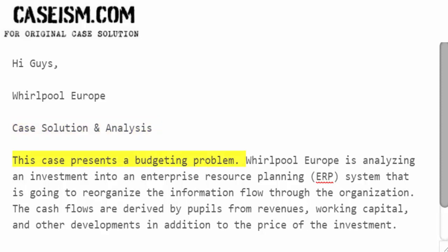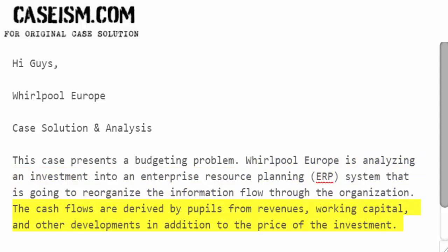This case presents a budgeting problem. Whirlpool Europe is analyzing an investment into an enterprise resource planning system that is going to reorganize the information flow through the organization. The cash flows are derived from revenues, working capital, and other developments, in addition to the price of the investment.